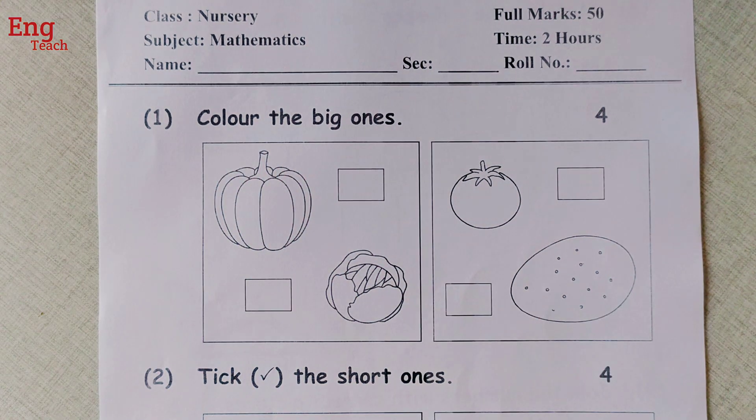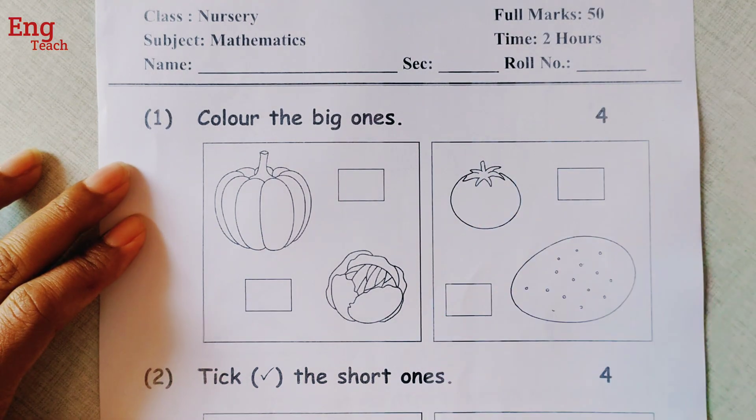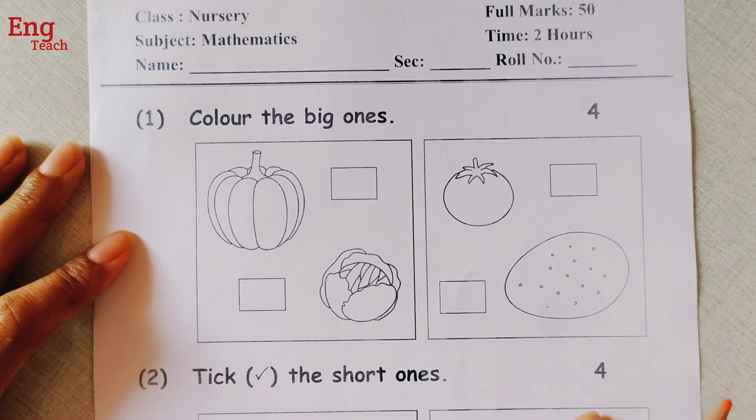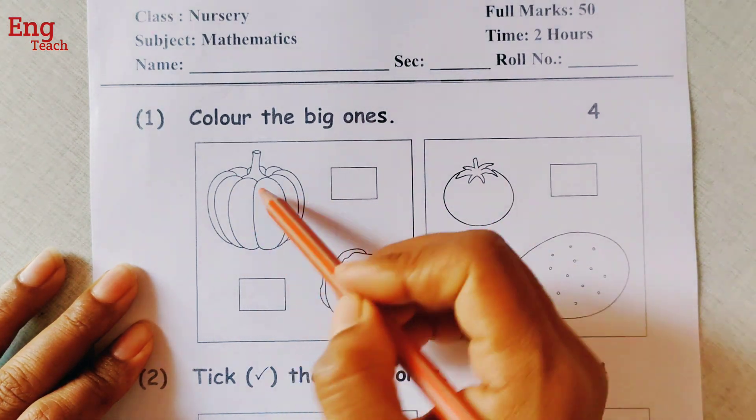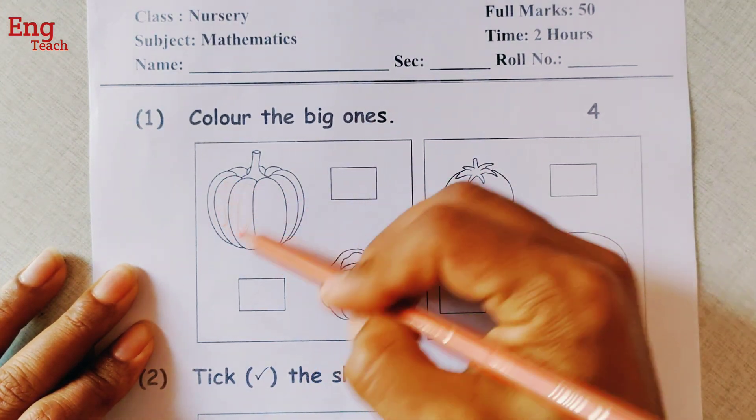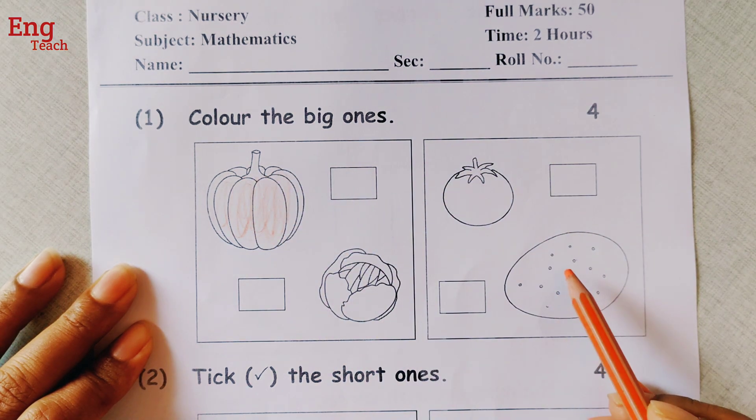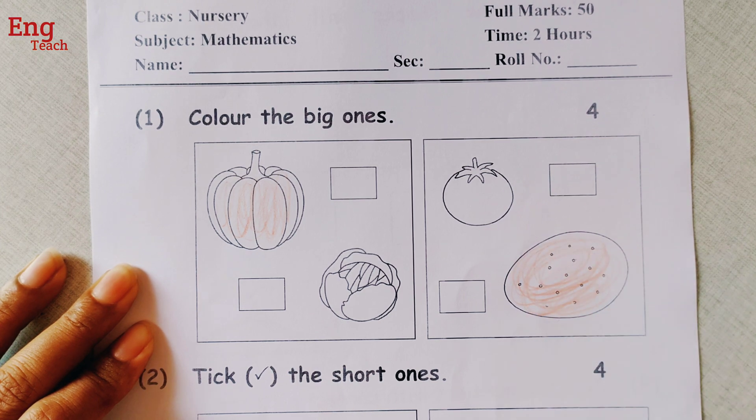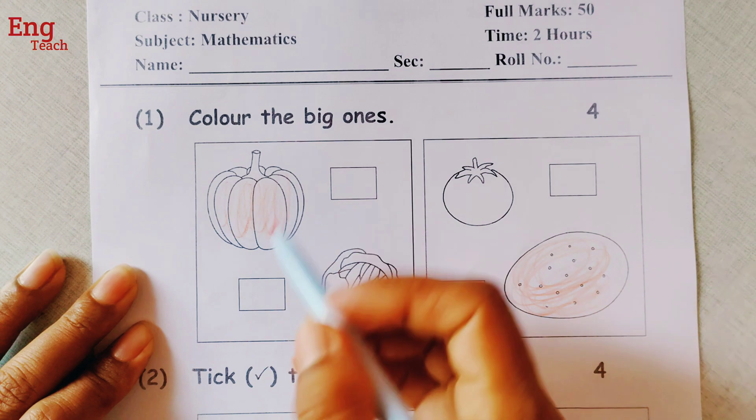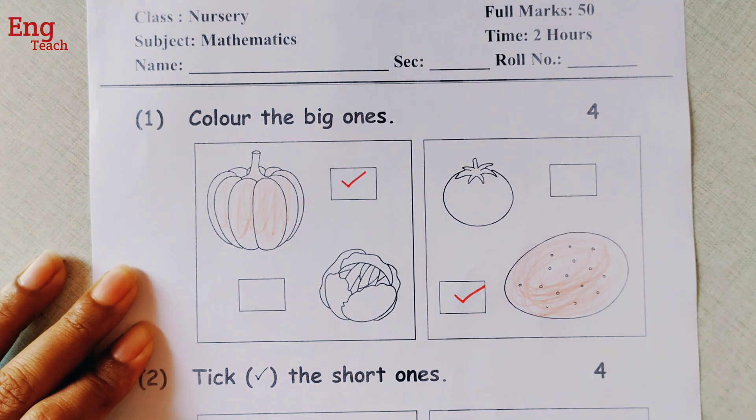Number 1, color the big ones. Now here you have to color the big one. Now let's color the big one. Which one is big? This one or this one? Obviously this one is the big one, so color it. And here which one is big? Obviously this one is the big one. So you have to color here this way. And then after, tick the big objects also. This one and this one.